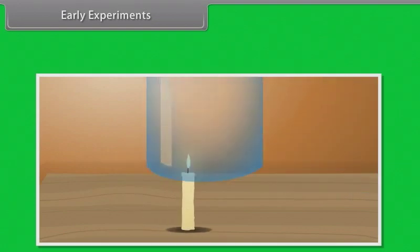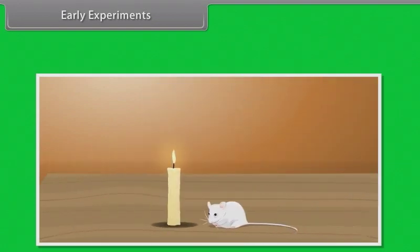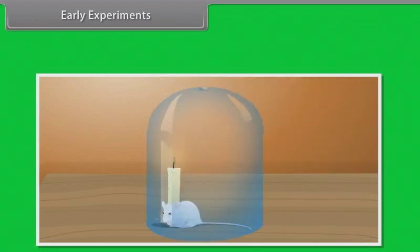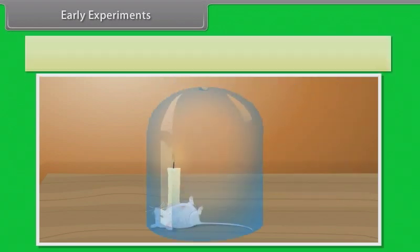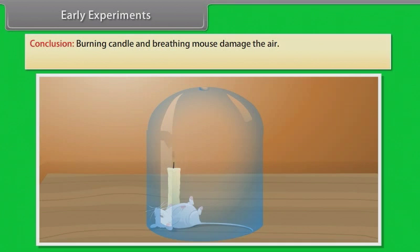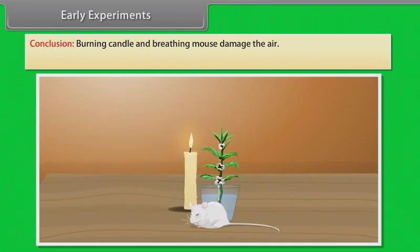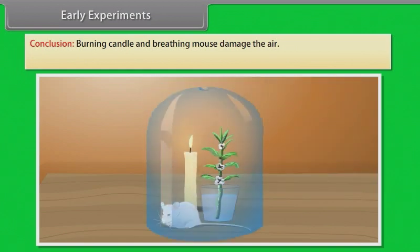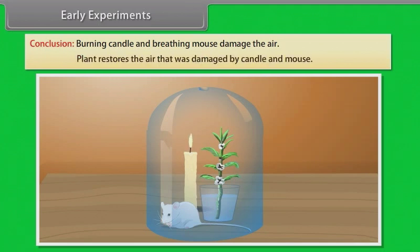In Priestley's experiment, he first placed a candle in a closed jar and it got extinguished. He then placed a mouse in the bell jar and the mouse got suffocated. He concluded that the burning candle and breathing mouse damaged the air. When he placed a mint plant in the closed jar, both the mouse and candle survived. He concluded that the plant restored the air that was damaged by the candle and mouse.